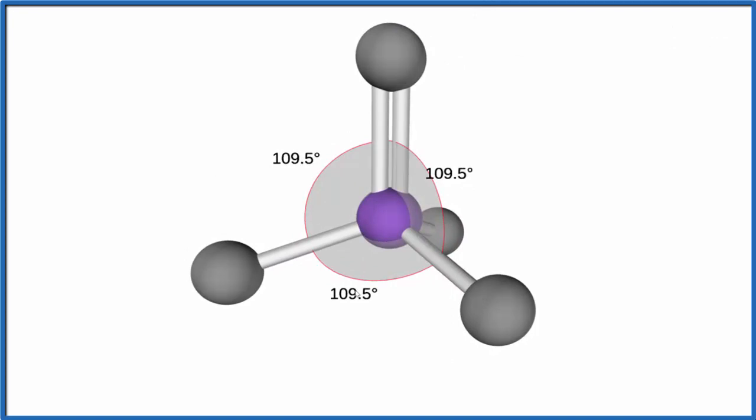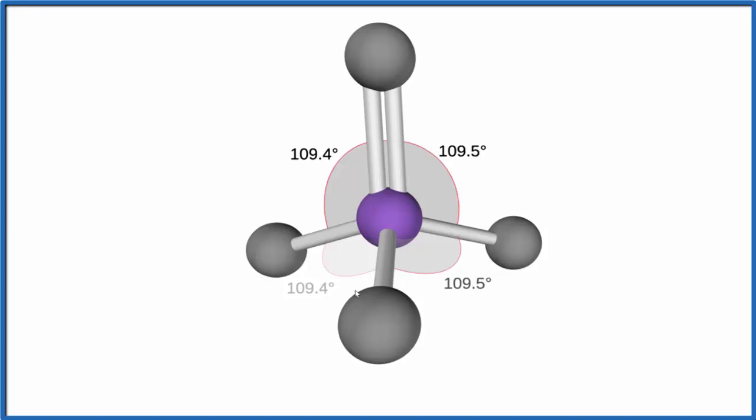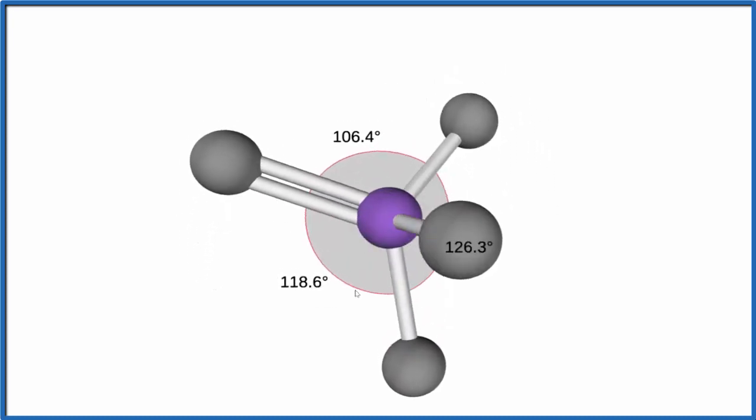And the bond angle should be 109.5, very close to 109.5. If we wanted to look at the electron geometry, since there aren't any lone pairs, the electron geometry would be the same as the molecular geometry. That would be tetrahedral.